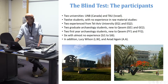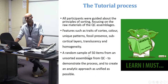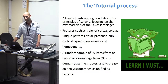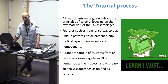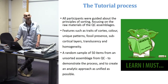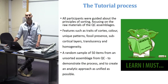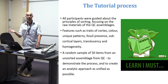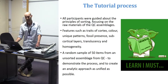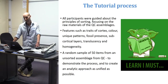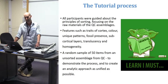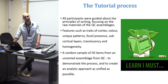All participants were guided about the principles of sorting, focusing on the material characteristics of Kesem Cave such as traces of cortex, color, texture, subcortical layers, degree of translucency, and degree of homogeneity. They were shown what makes each flint type unique. Afterwards, a random sample of 50 items from an unsorted assemblage from Kesem Cave was group-analyzed by all participants to understand the analysis process and create as unified an analytic approach as possible.